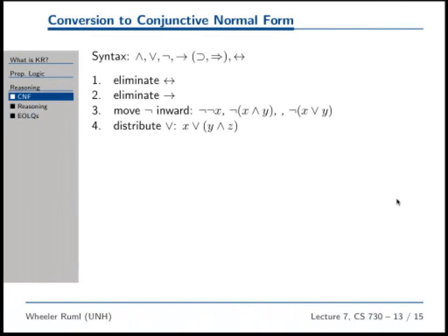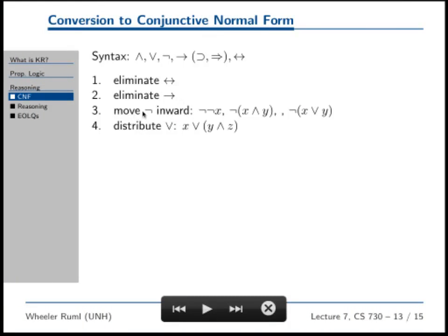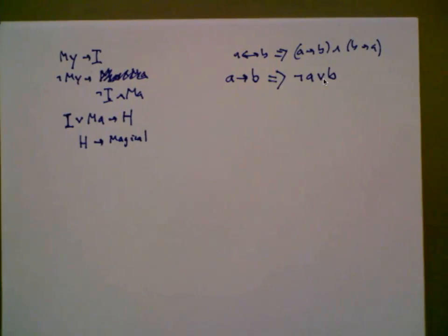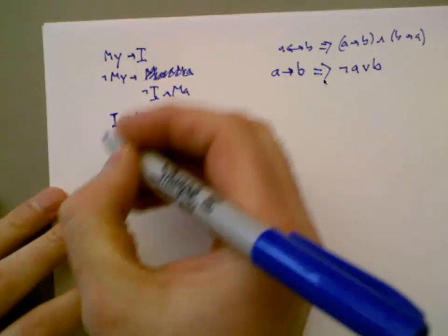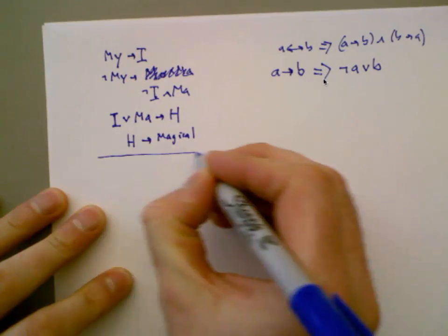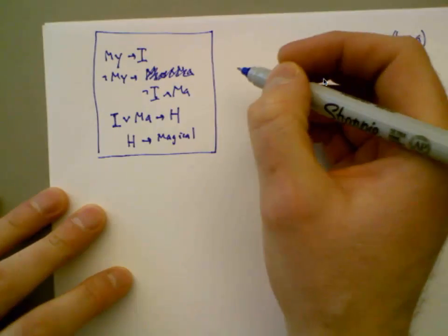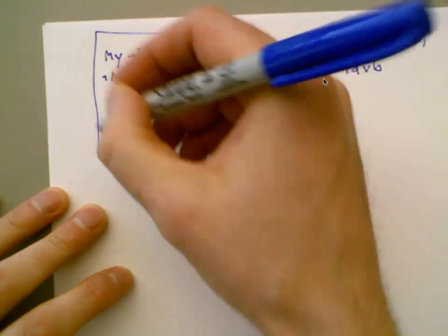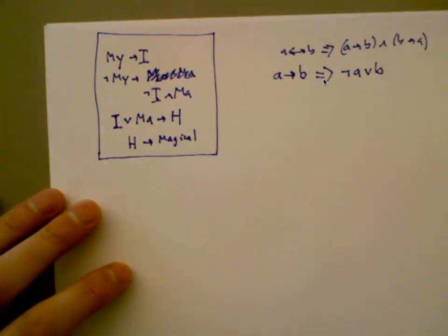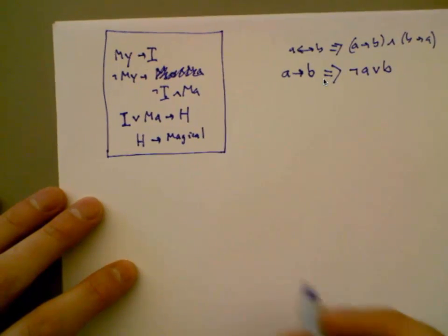So now the next thing we do is move negation inward. Let's do these transmogrifications to our little knowledge base about unicorns. Those are formulas in propositional logic — let's translate those into CNF.